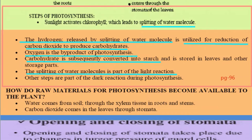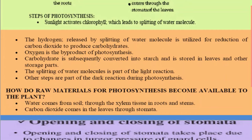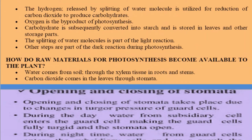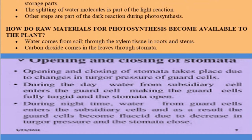In summary: carbon dioxide and water join together. Water breaks down in the presence of light, producing hydrogen and oxygen as a byproduct. That hydrogen joins with carbon dioxide to form carbohydrate. Water comes from the soil via the roots, and carbon dioxide enters through the stomata of the leaves.